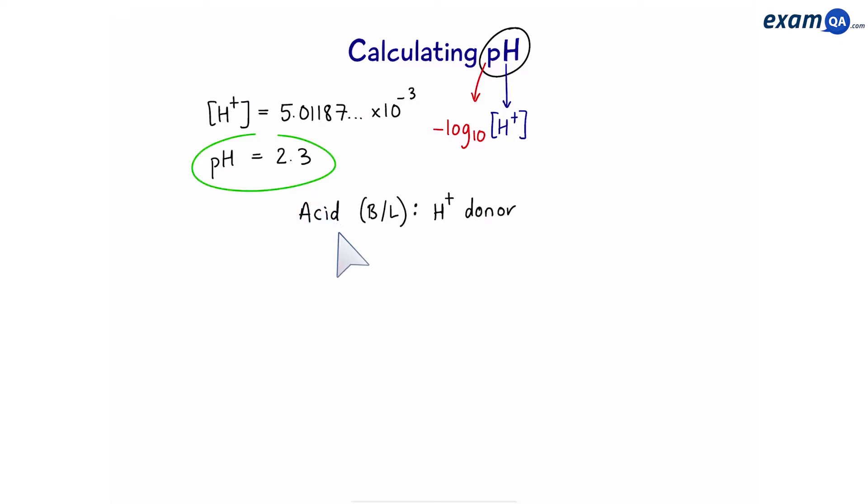Now an acid, according to the Bronsted and Lowry definition, is a proton or hydrogen donor. That means it releases hydrogen ions when in solution. We can have strong acids which fully dissociate or weak acids which partially dissociate. In this video, we're going to be talking about the strong acids.